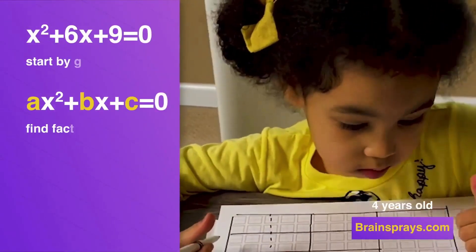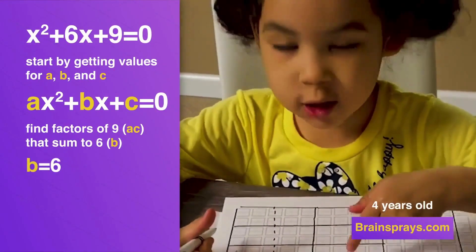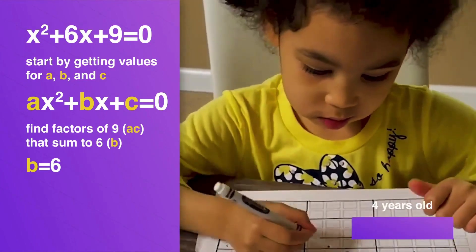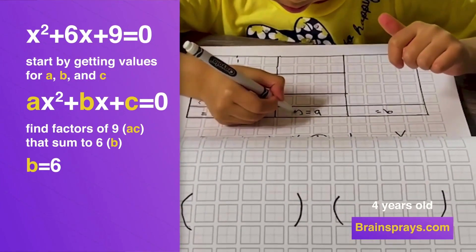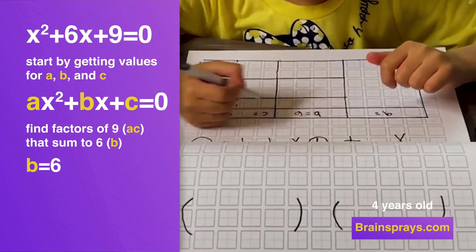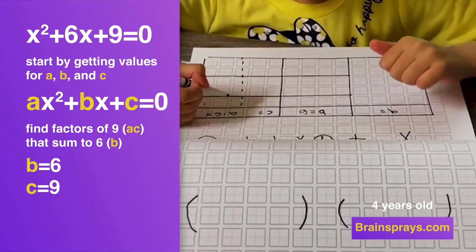So what are you going to do here? B equals 6. Okay. 6? Yeah. What else? C equals 9.